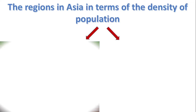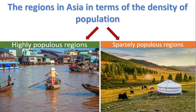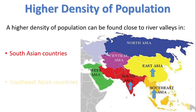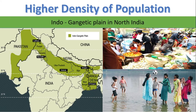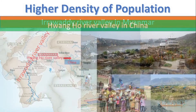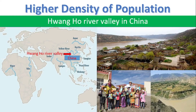Now let's look at the regions in Asia in terms of the density of population. Some regions are highly populated, whereas some regions are sparsely populated. Based on density, a higher density of population can be found close to river valleys in South Asian, South East Asian, and East Asian countries. The Indo-Gangetic Plain in North India is an example of a river valley in South Asia with a higher density of population. The Irrawaddy River Valley in Myanmar is an example for South East Asia, and a major river valley in China similarly shelters a higher density of population in East Asia.